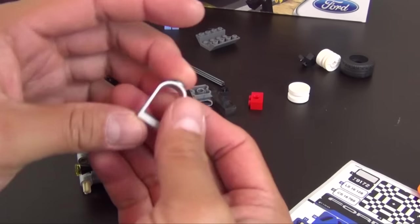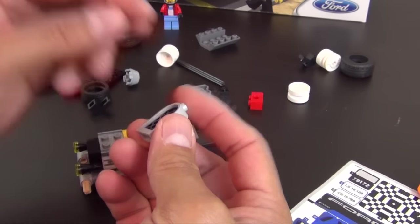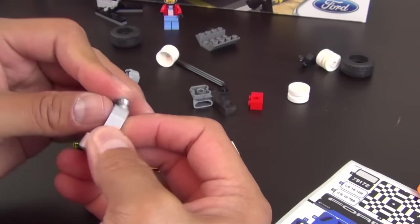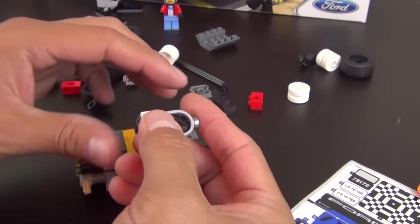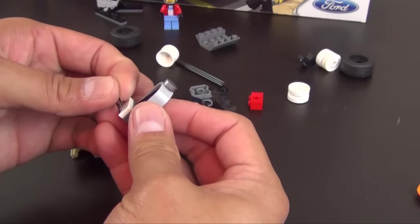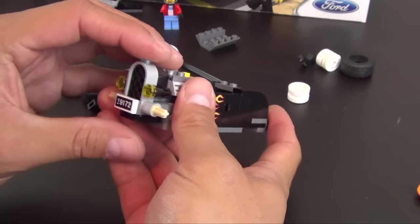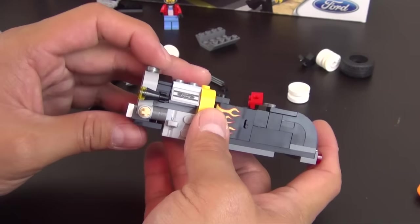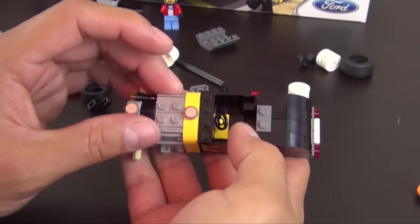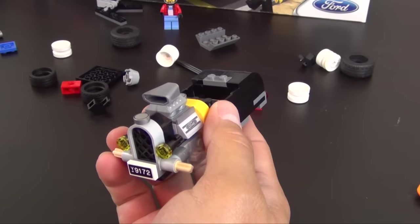Next we have an arch top window with a lattice piece inside of it. Attach it to a bracket. Then we have a radiator grill and we're going to put our front license plate number Y9172 just like the back. This attaches right to the front, so there's our front radiator. We have another one of these printed one by one round tiles with a giant air intake panel.